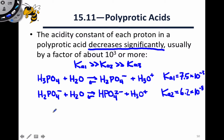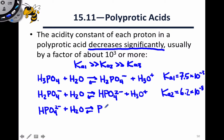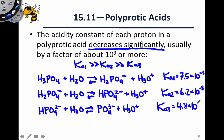Finally, that conjugate base HPO4²⁻ reacts with water to form the ultimate conjugate base, PO4³⁻, and H3O⁺. The Ka value here, Ka3, is much smaller even than Ka2 — it's 4.8 × 10⁻¹³. So with each jump from Ka1 to Ka2 to Ka3, we're decreasing the Ka value by about a factor of 10⁻⁵.